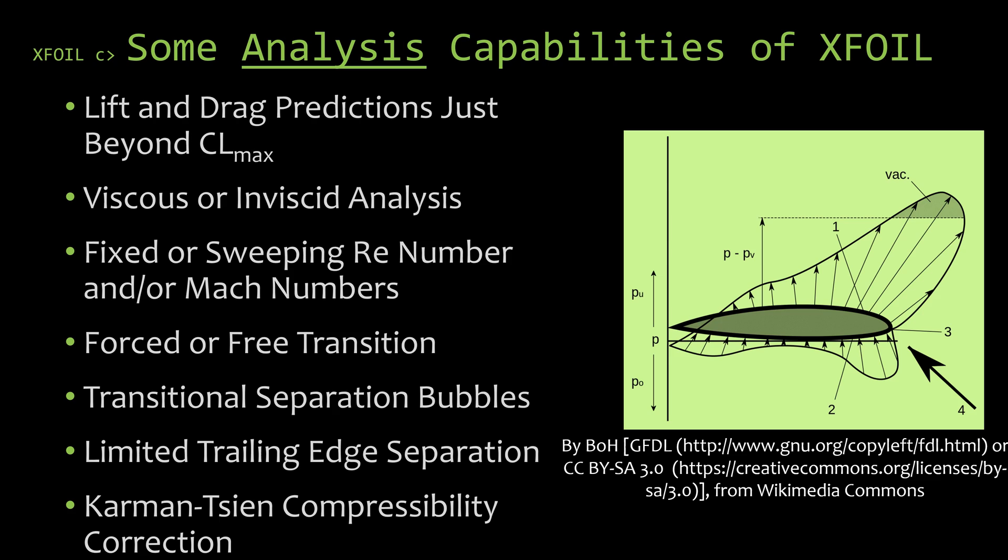XFOIL is also able to do both a viscous and an inviscid analysis of an airfoil. One of the really powerful capabilities is that you're able to take an airfoil and not just analyze it at one particular Reynolds number, one particular Mach number, or one particular angle of attack — you're able to sweep through Reynolds number, Mach number, and angles of attack to analyze the airfoil in multiple flow situations. This automates analyzing tasks so you don't have to run it for each individual case.